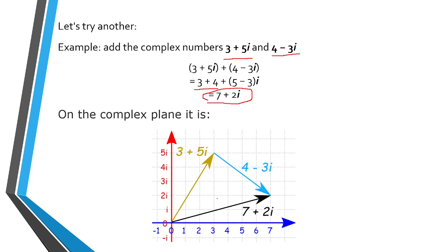We add 4 minus... Then from here, add 4. So from 3: 1, 2, 3, 4. Then the 5 minus 3 steps: 1, 2, 3. So find this point. So this is 7 plus 2i. So that is for the addition of complex numbers.